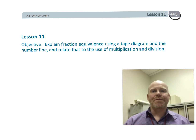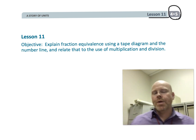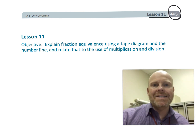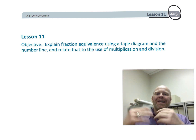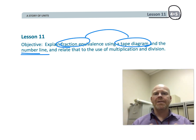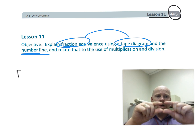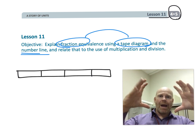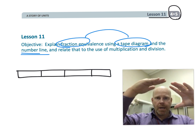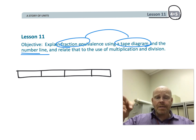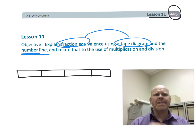This is fourth grade, Module 5, Lesson 11. In this lesson, we're going to be taking that area model we've been using for the past few lessons and putting it aside. Now we're going to be connecting fractions to number lines and tape diagrams. Tape diagrams are kind of a special case area model where we always have one row — essentially an area model with a height of one.